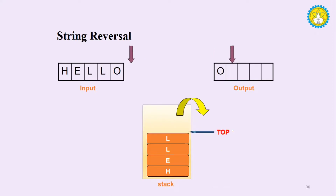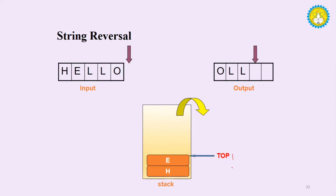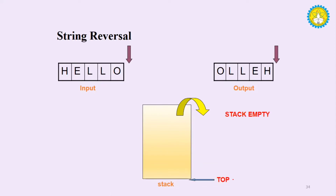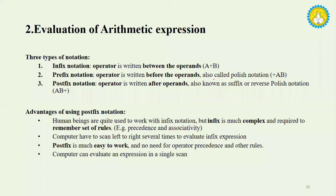Now when we start popping, we pop and see the top end value decrease: 3, then 2, 1, 0, until the stack is empty at minus 1. We've reversed the string completely. So now we have string reversal implemented using a stack.